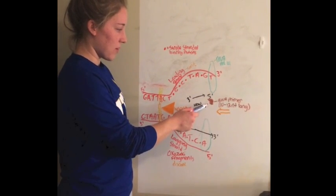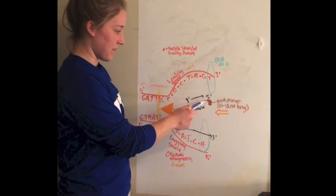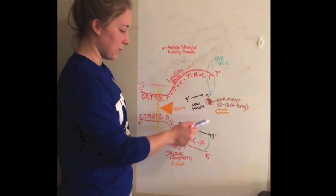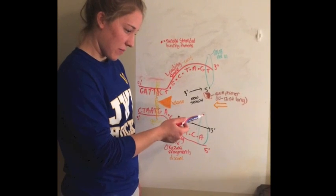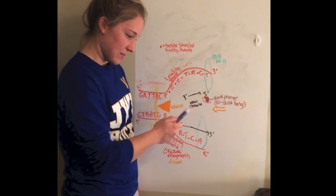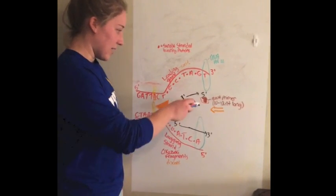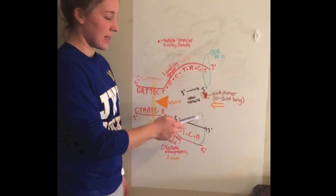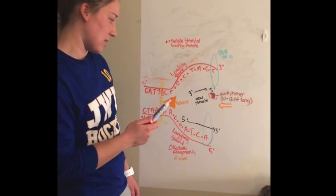RNA primer is found on the 5' end of the new strand and the RNA primer is added onto here by the RNA primase and it's about 10 to 12 nucleotides long.